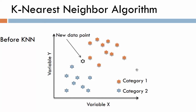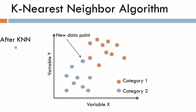With this algorithm, we will be able to determine the category of a new data point, which in this case turns out to be category two, shown by the blue color. To understand the algorithm, we are going to introduce a four-step procedure.